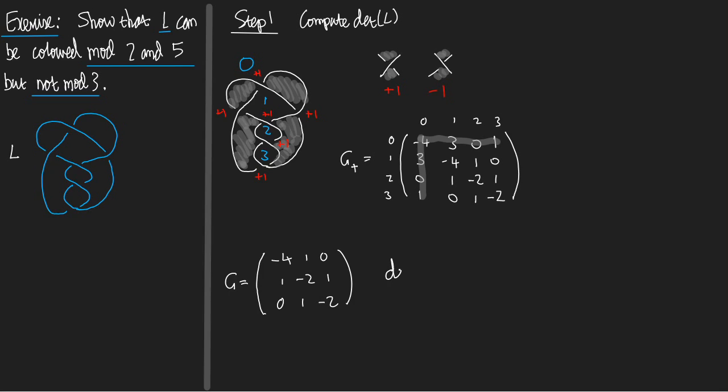So det G, that's minus 4 times the determinant of this square matrix, which is 4 minus 1. Minus 1 for the second entry, times the determinant of the first and last 2 by 2 column. That's minus 2. So this is minus 12 plus 2. So that's minus 10. So det L is, det G is 10. So that was my step one.